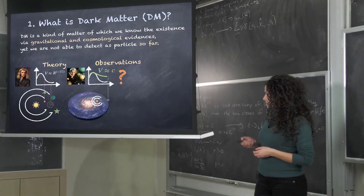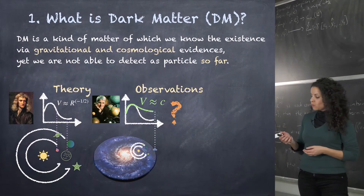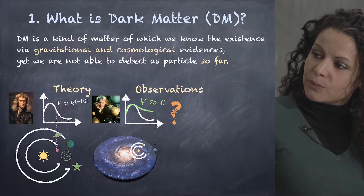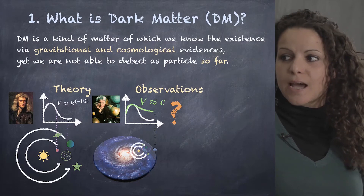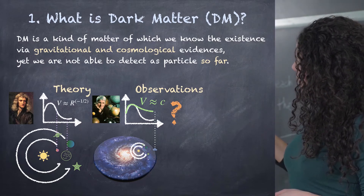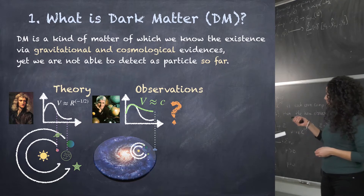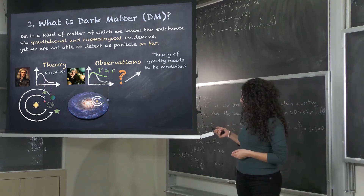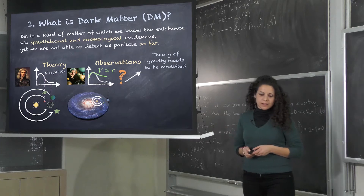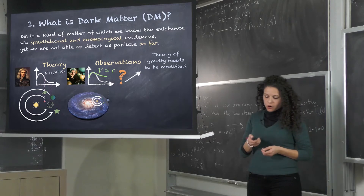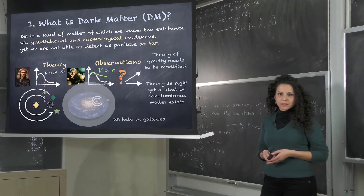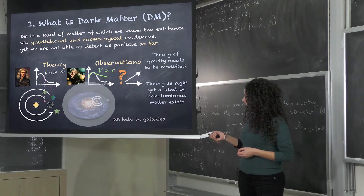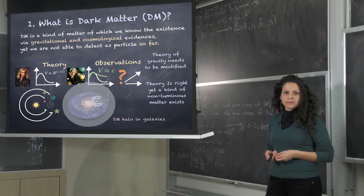When we expand this observation to galactic scales, we found that this law is not verified. This was the observation by Vera Rubin: the velocity in spiral galaxies — galaxies that are rotating — is almost constant. So something is wrong. In order to justify this observation, we can admit that the theory of gravity needs to be modified, or we can admit that a new kind of matter that we cannot observe because it does not emit light exists in this system, and that this dark matter forms a halo in which the luminous matter is embedded.